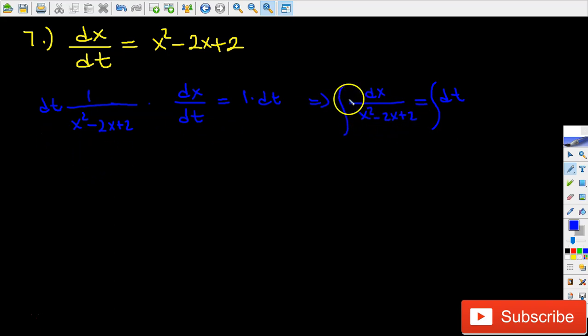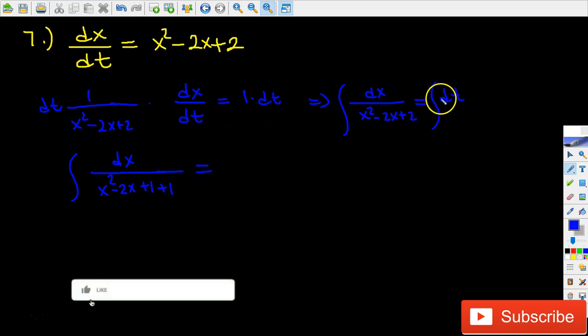Basically, this left hand side integral can be written as dx over x squared minus 2x plus 1 plus 1, which equals the integral of the right hand side, which is t plus c.